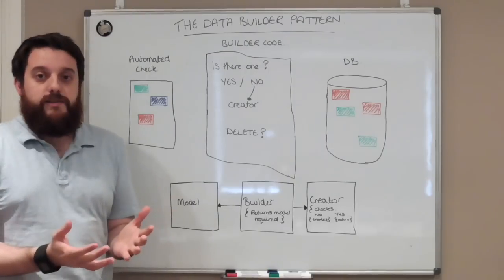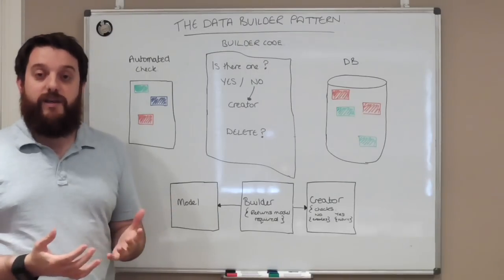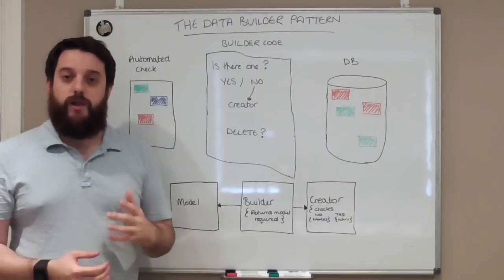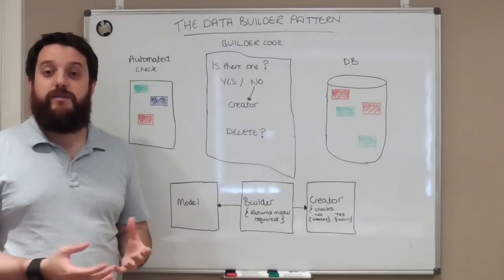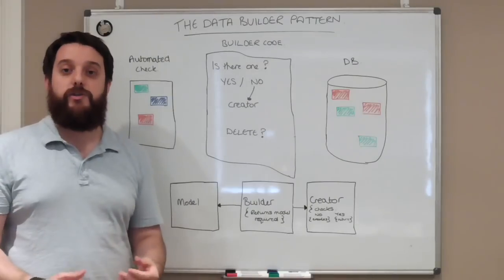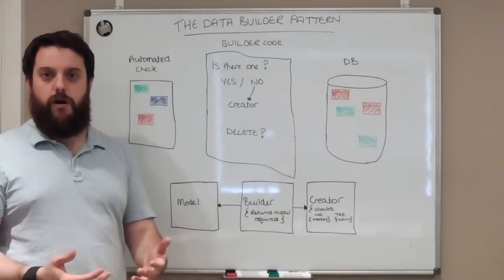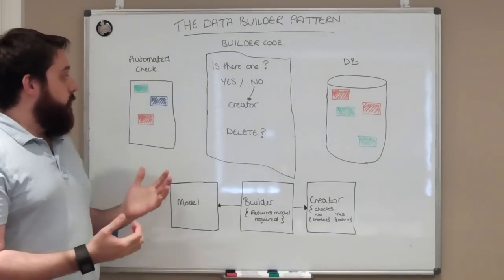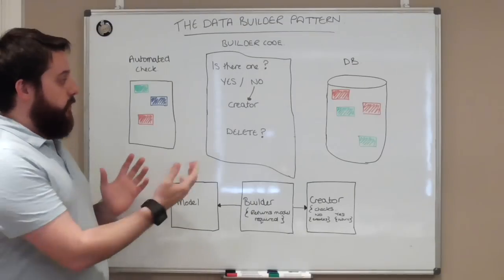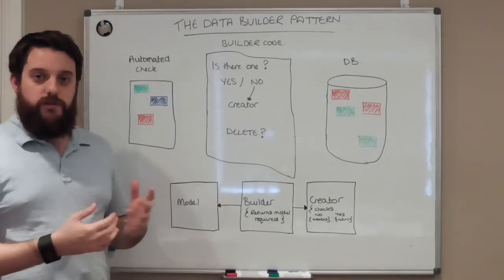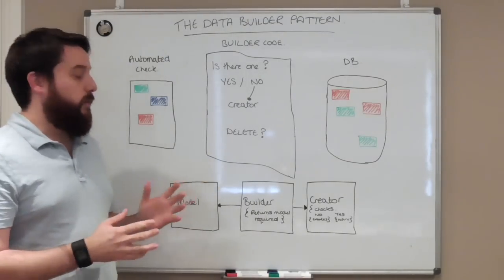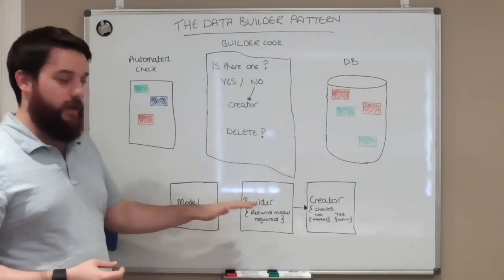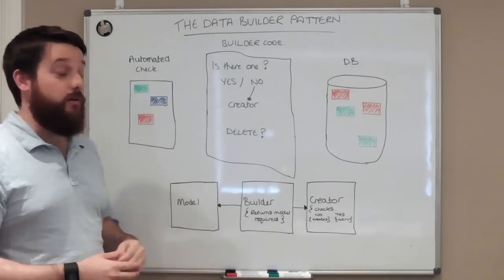So what it is is simply a pattern for managing data. Most automated checks will have some data in them — they'll need data in order to put into the application to run the scenario that you're trying to automate and check. I'm using some colour-coded blocks instead of writing lots of code, so we're going to quickly explain how it works and then we'll look at how you would actually build the code itself.